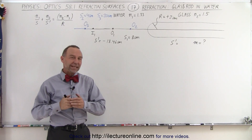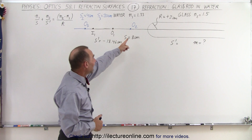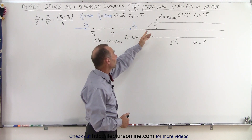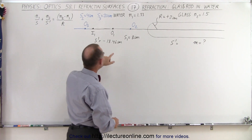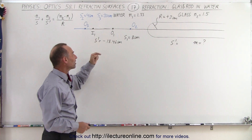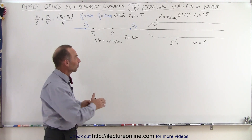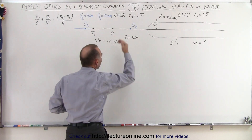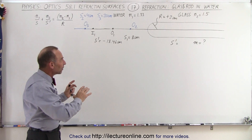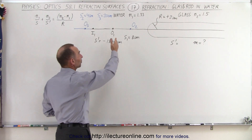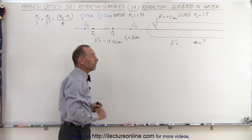Welcome to our lecture online. In the previous video we placed the object a distance of 8 centimeters away from the boundary between the water and the glass rod, and we found that the image was on the same side as the object at minus 18.46 centimeters, or 18.46 centimeters in front of the boundary. When we had the glass rod in air, that was not the case — when the object was placed at 8 centimeters, the image appeared inside the glass rod.